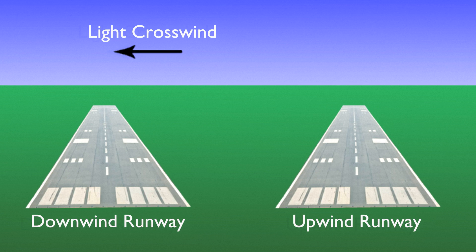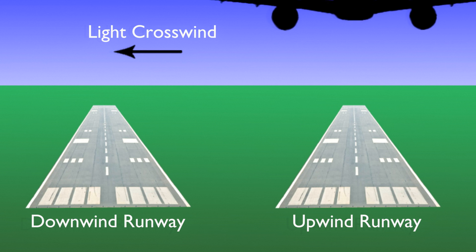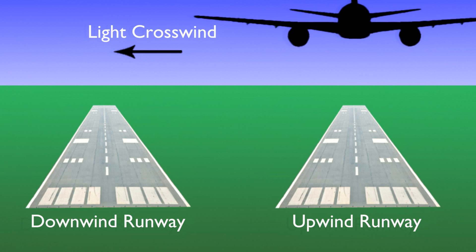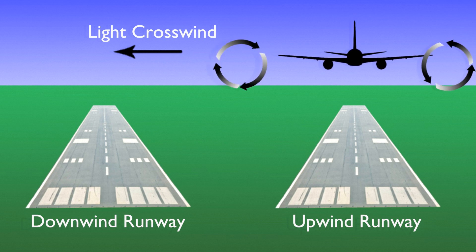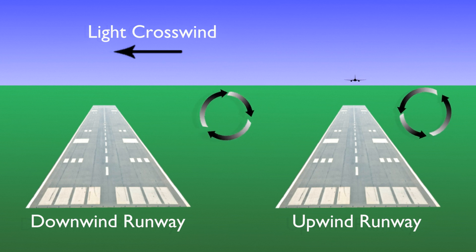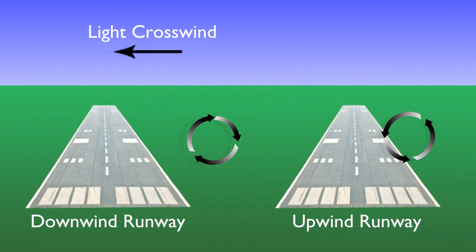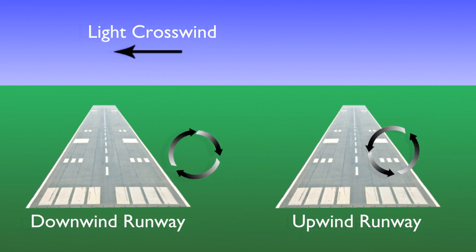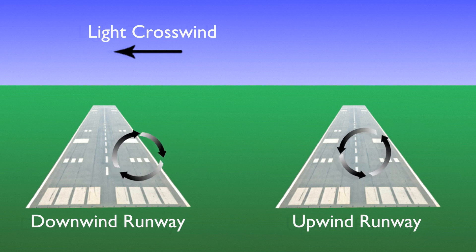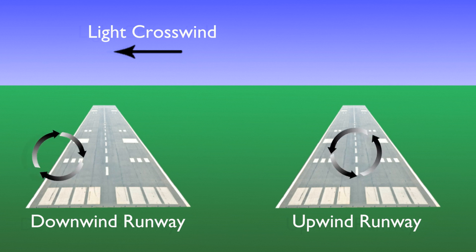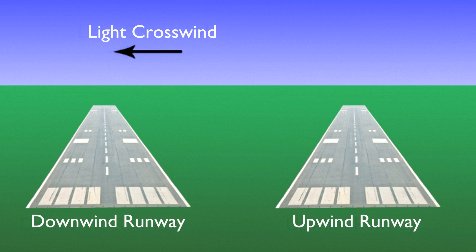Wingtip vortices move with the wind. Since they drift at a few knots over the ground, this means that a few knots of crosswind can hold the upwind vortex in place, or could carry the downwind vortex over to a parallel runway. When landing on a downwind parallel runway, be cautious of wake turbulence from the other runway, which could drift over to your runway with the wind. If landing with a crosswind of a few knots, be cautious of that upwind vortex, which is likely sitting in place right over the runway.